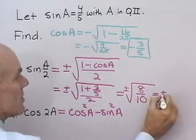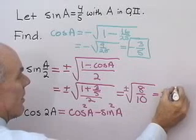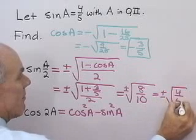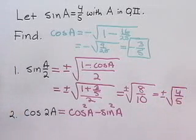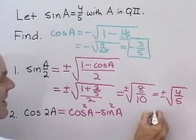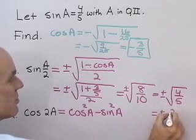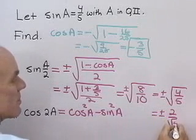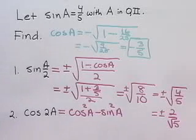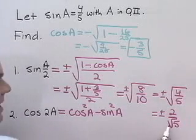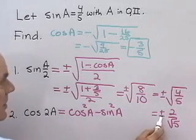In reduced form, is going to be plus or minus square root of four-fifths, and so that is going to be plus or minus 2 over square root of five. So, this is the answer, except I need to determine what sign this is going to be.